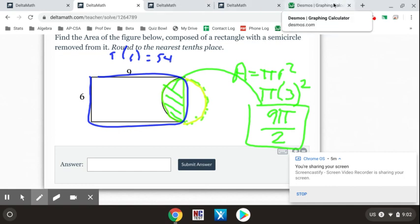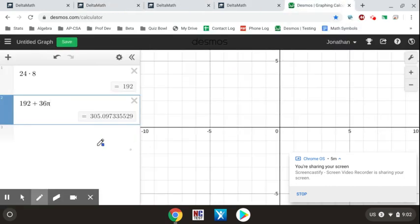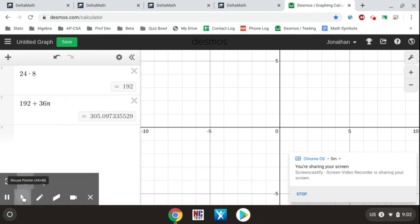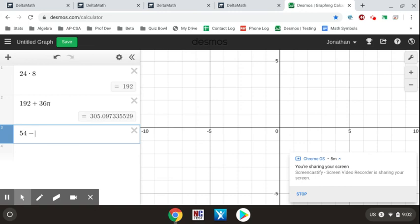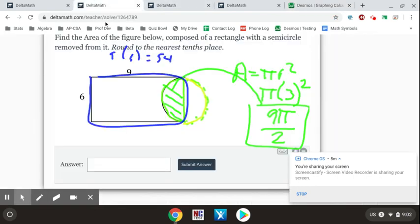So I'm going to go back to Desmos. I'm going to do 54 minus 9π over 2. So 54 minus 9π over 2, and that's 39.9, I'm sorry, 39.9 should be the answer there. So once again, answer 39.9, and that should be correct.